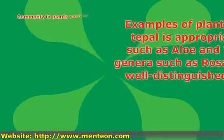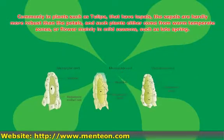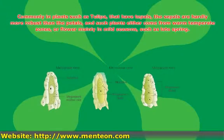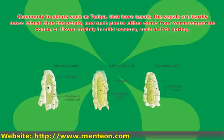Commonly in plants such as tulip that have tepals, the sepals are hardly more robust than the petals, and such plants either come from warm-temperate zones, or flower mainly in mild seasons, such as late spring.